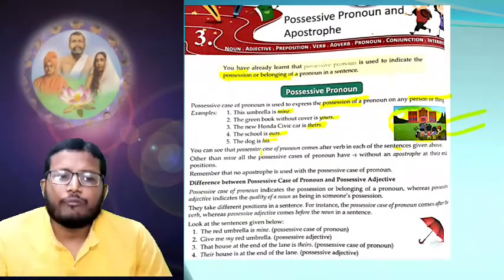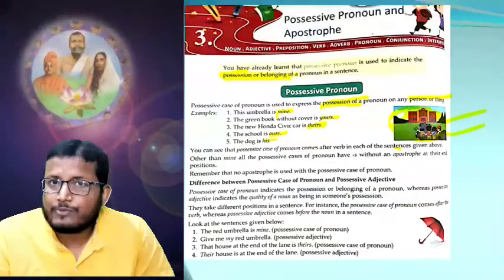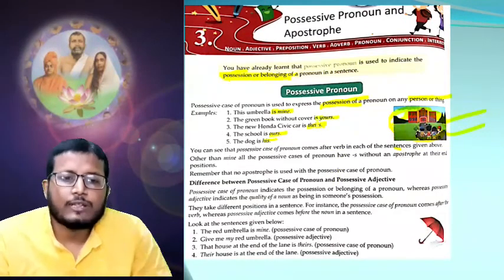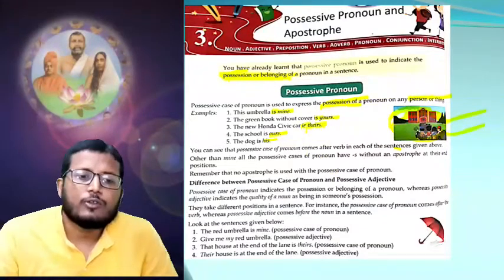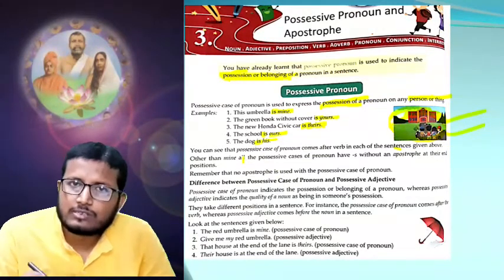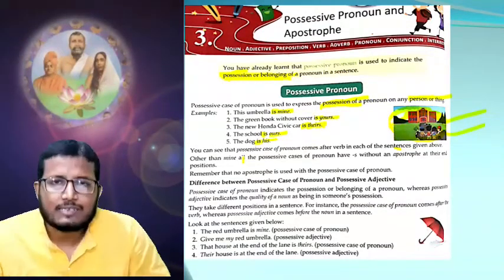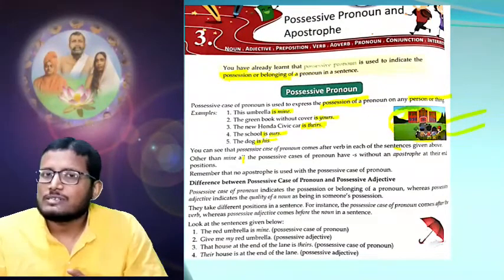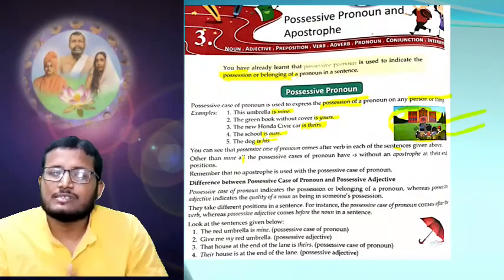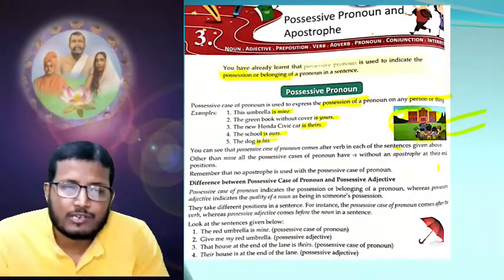If you follow the first sentence, 'the umbrella is mine' — the verb is 'is'. 'The green book without cover is yours' — is. 'The new Honda car is theirs' — is. 'The school is ours' — is. 'The dog is his' — is. Throughout all five examples, the possessive pronouns come after the verb. Your book states: positive case of pronoun comes after verb in each sentence given above.